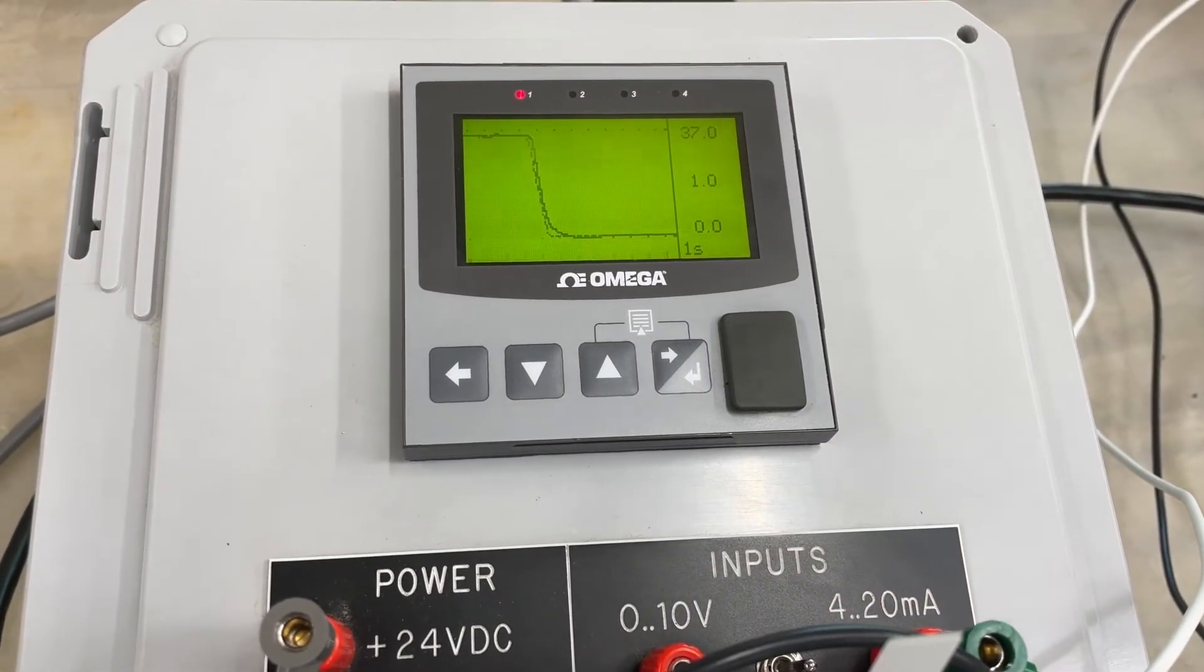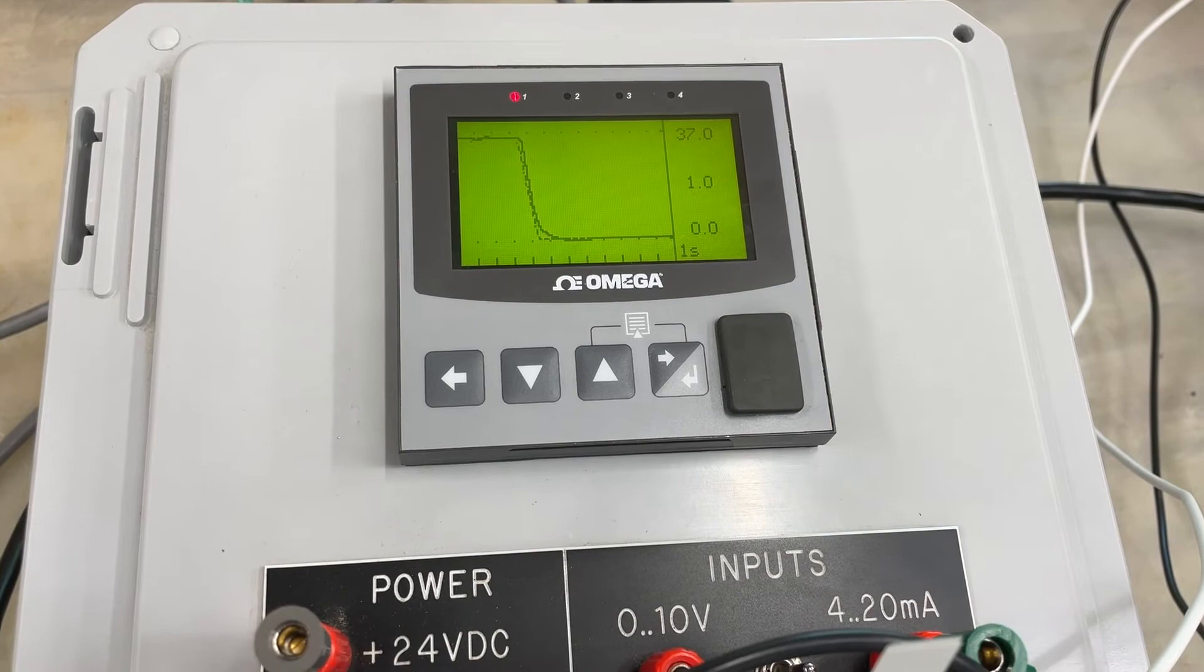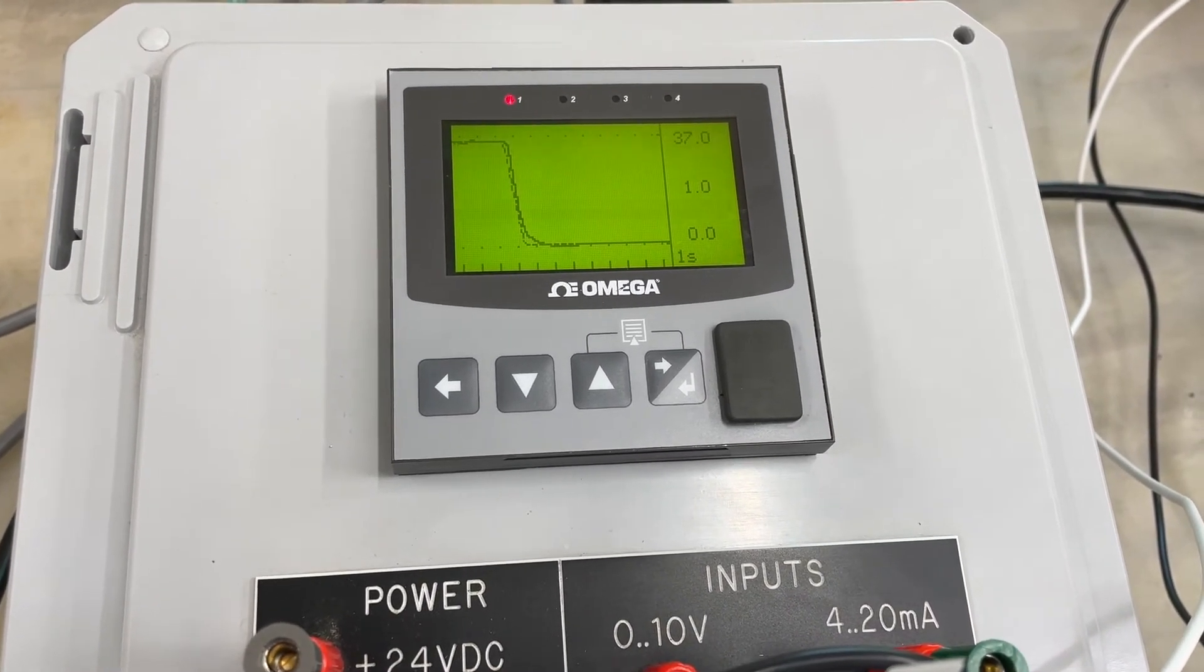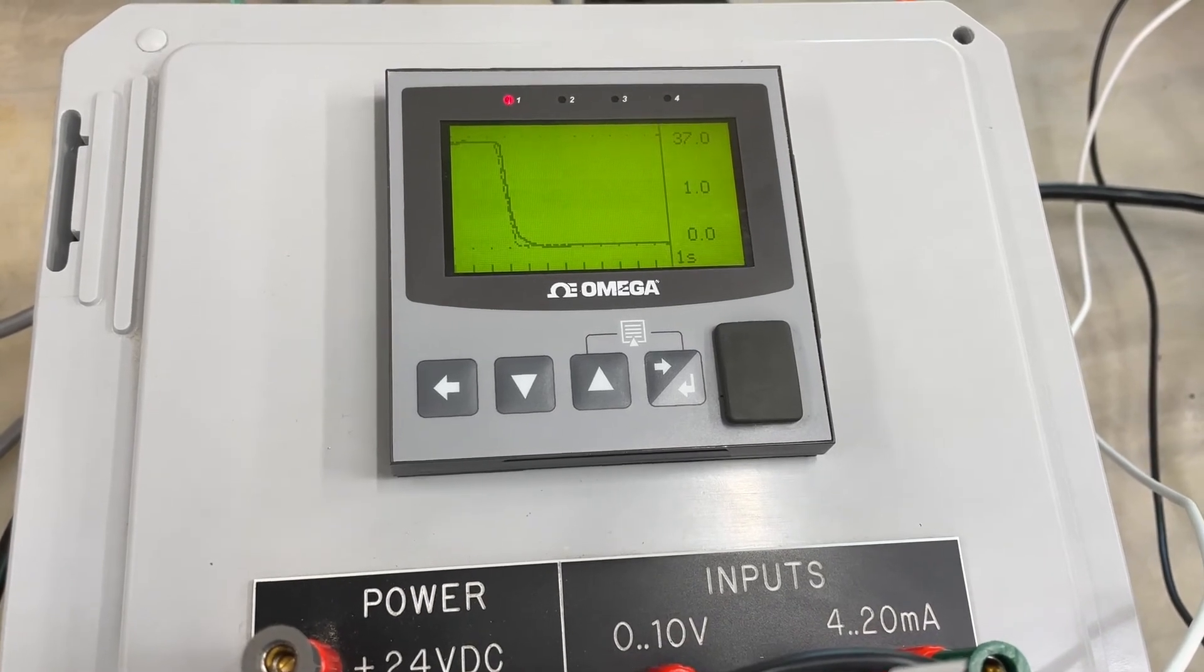I've just changed the set point to 1% of the total range which is 10 grams per minute and you can see the PID loop worked to get the flow to reach the set point. Now that it's steady I will increase the set point.